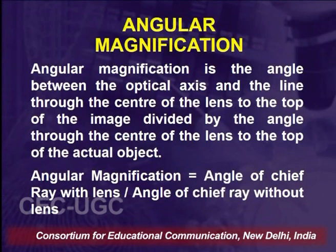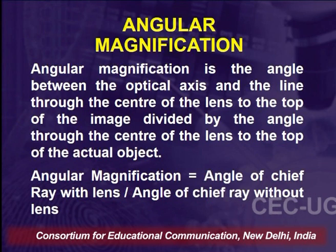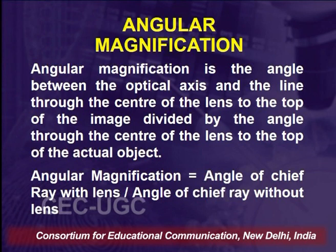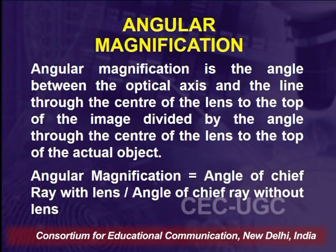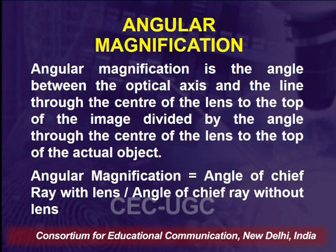Beyond linear magnification, we also have angular magnification. It is the angle between the optical axis and the line through the center of the lens to the top of the image, divided by the angle through the center of the lens to the top of the actual object. In simple terms, angular magnification is the angle of chief rays with lens divided by the angle of chief ray without lens. Both linear magnification and angular magnification are used when discussing a microscope.